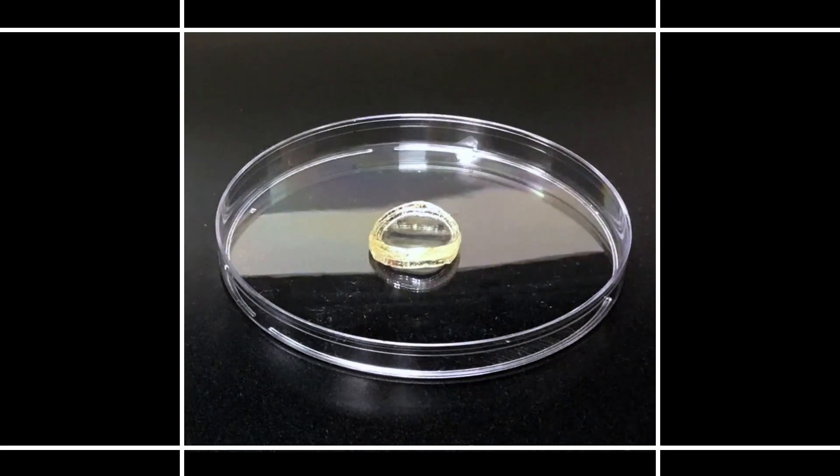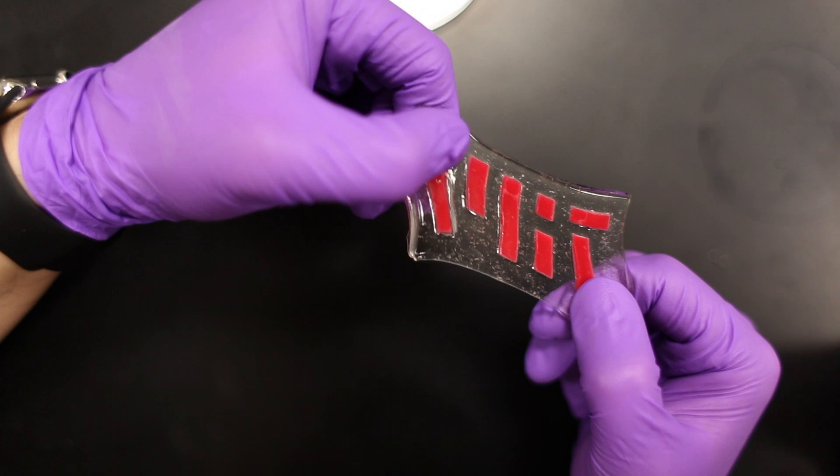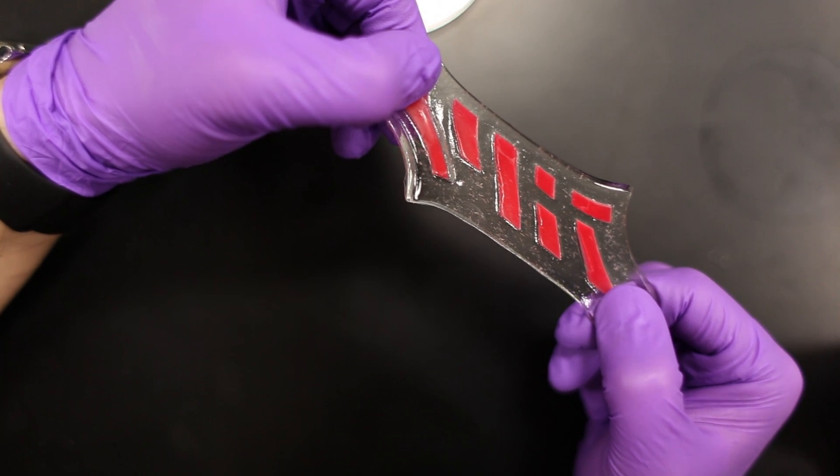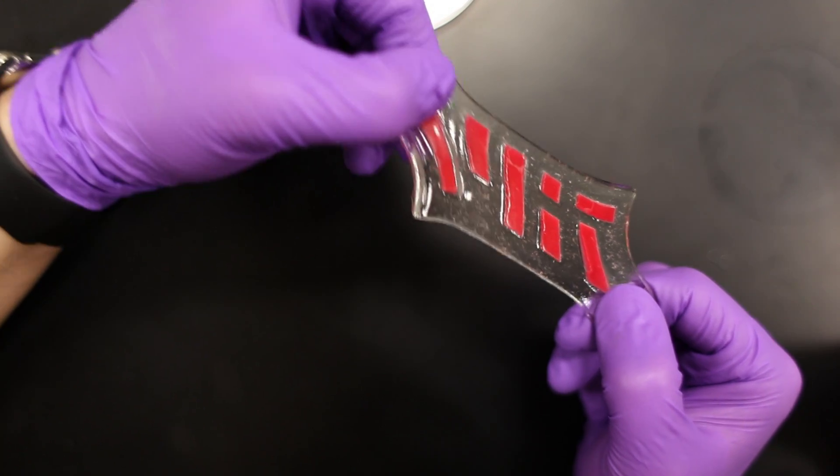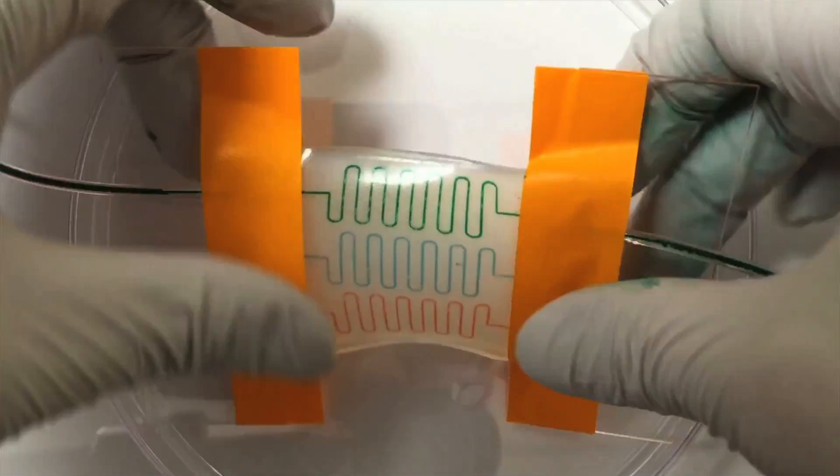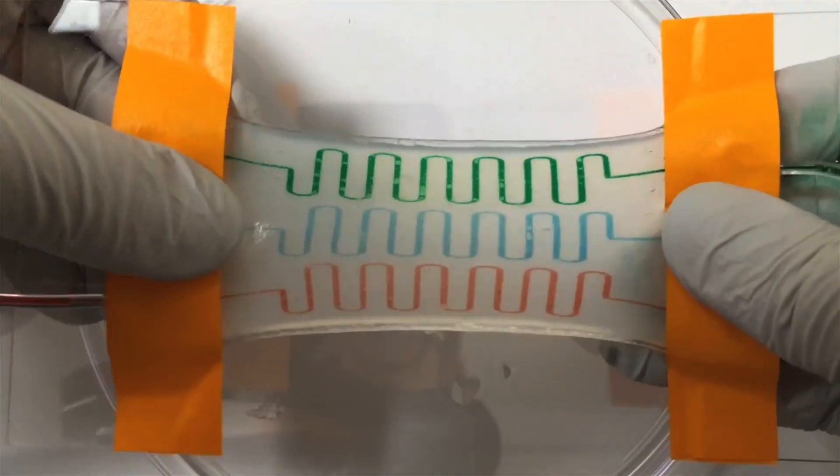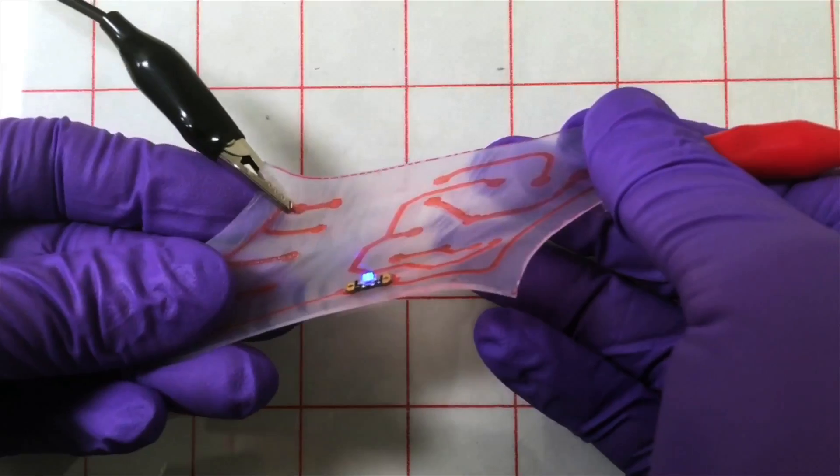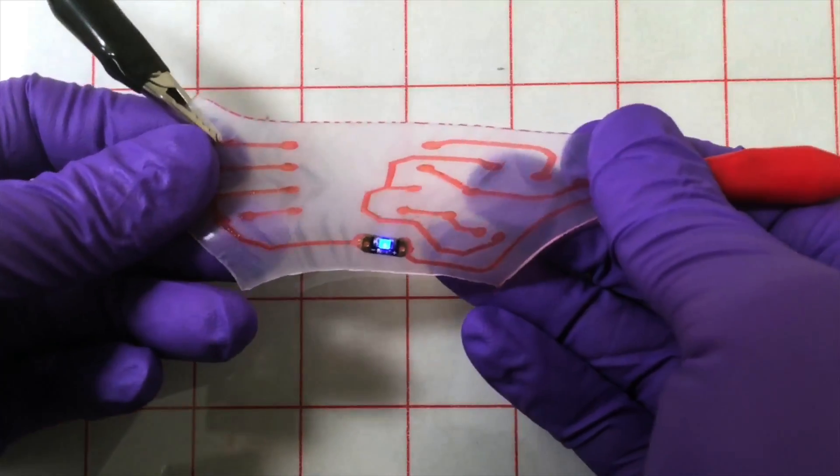Now, the same team of researchers from MIT that developed a robust, sticky hydrogel has found a way to prevent hydrogels from dehydrating with a technique that could lead to longer-lasting contact lenses, stretchy microfluidic devices, flexible bioelectronics, and even artificial skin.